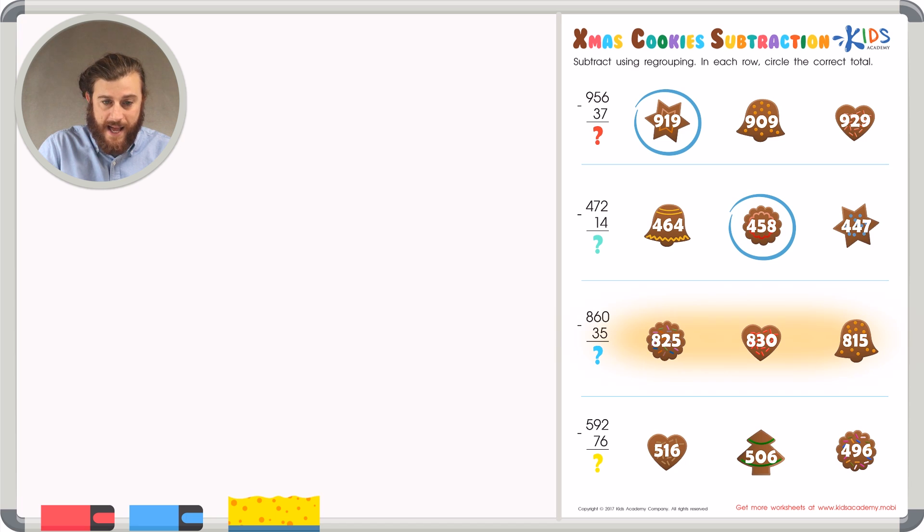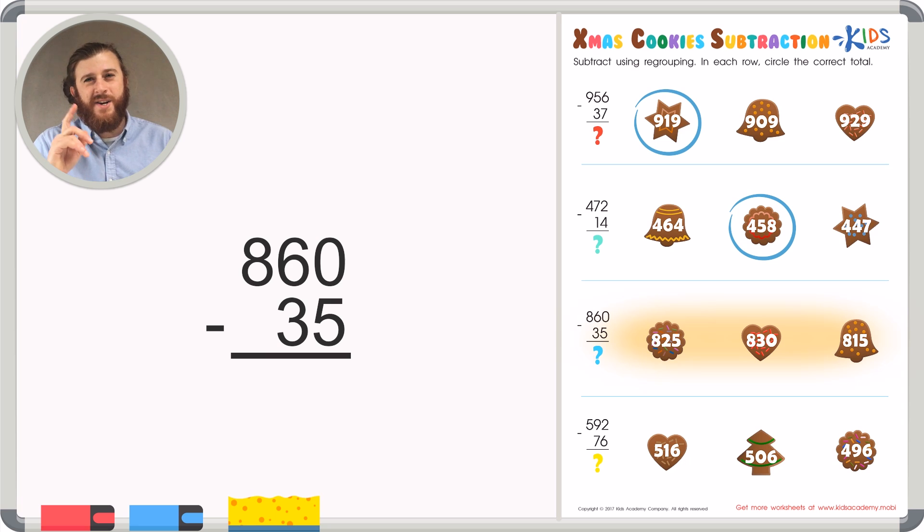Our third example has us subtracting 860 minus 35. I noticed that in the ones place there's a zero. It has nothing to give. So we're going to have to borrow from the tens place. We can borrow the one 10 from 60. And turn our 60 into 50. Or 5. And give that 10 to the ones place.